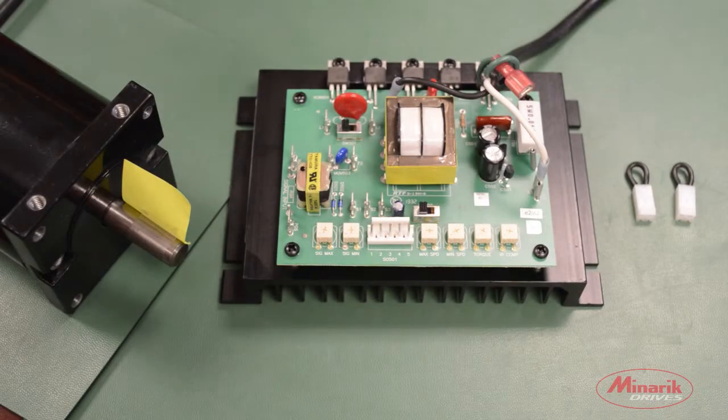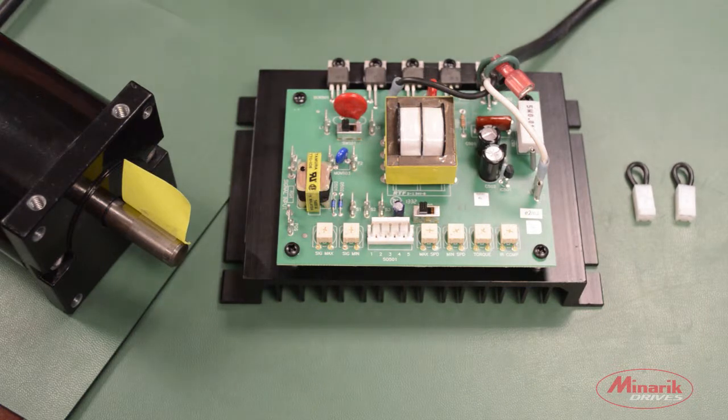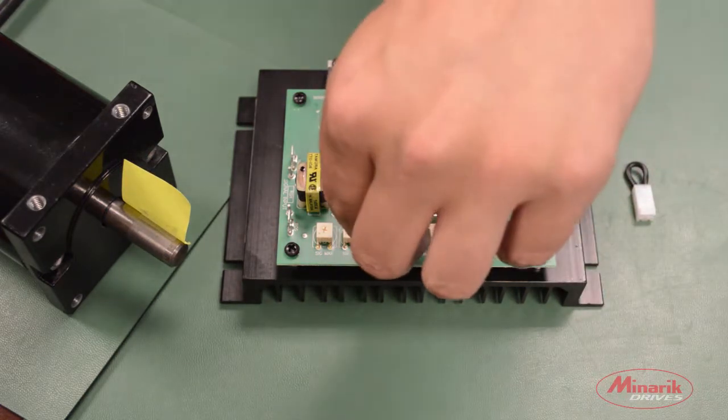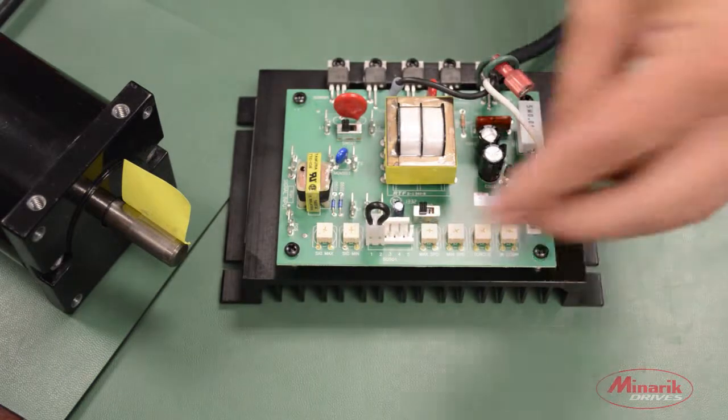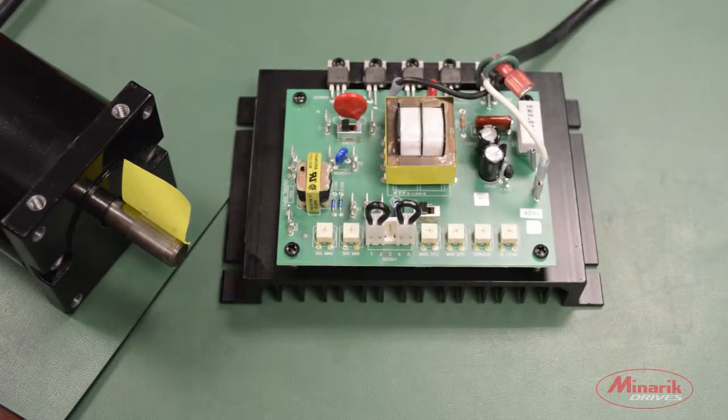To run this drive using a speed potentiometer, we must switch the drive to manual mode. To do this, we'll use a jumper to short pins 1 and 2 and 4 and 5 on the mode select header block.